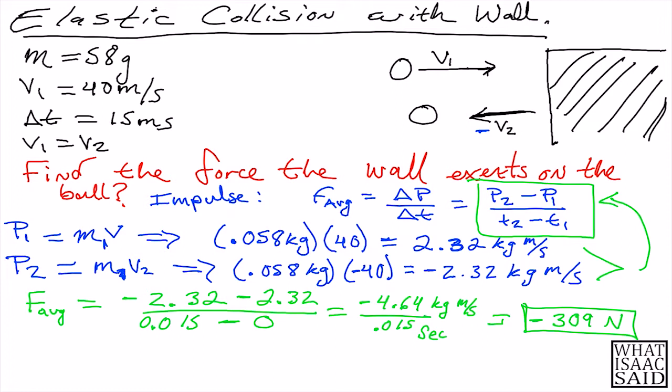We know that this wall is applying a force of minus 309 Newtons as this ball hits this wall. We also know, because forces are equal and opposite, that this ball is hitting this wall with 309 Newtons of force. Thank you for watching and I will see you in the next video.